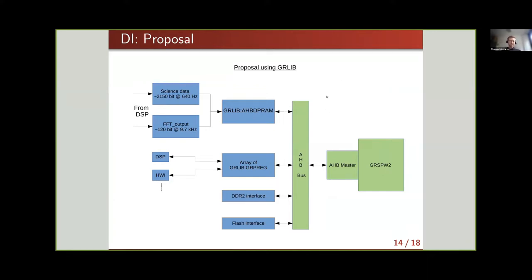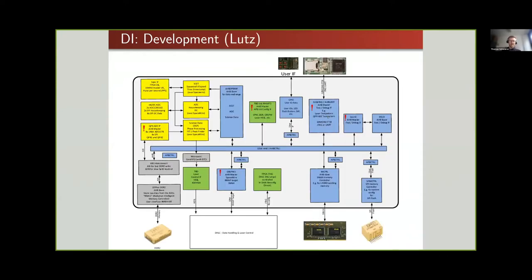GRLIB provides IP cores for the interfacing. We solve data processing with block RAM as a temporary buffer, which can be read out by the AHB bus — or more precisely by an AHB master from the SpaceWire. On top we have registers for configuration, and also interfaces to our memories. This is an ongoing development supported by Lutz Puttlmann from Airbus.